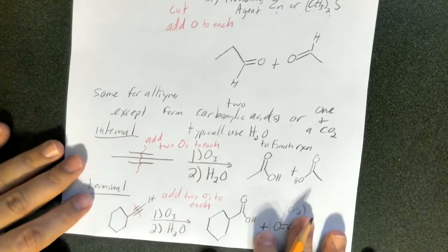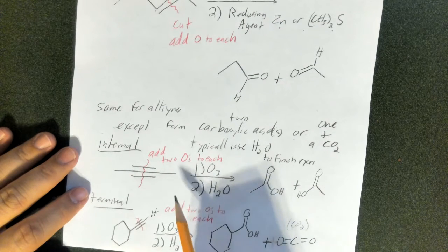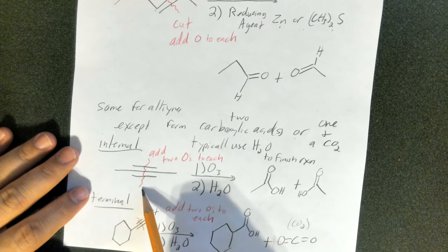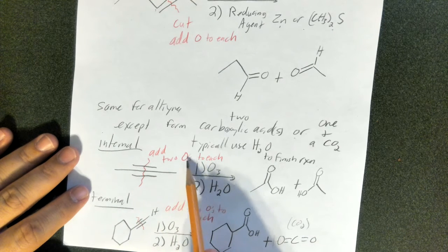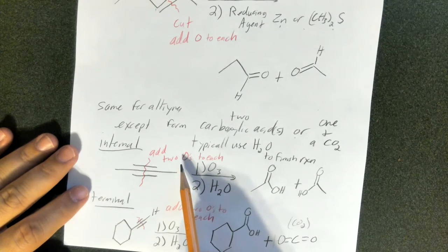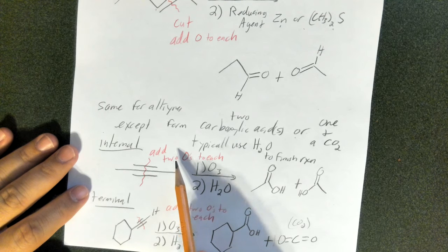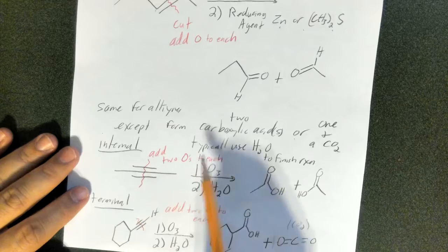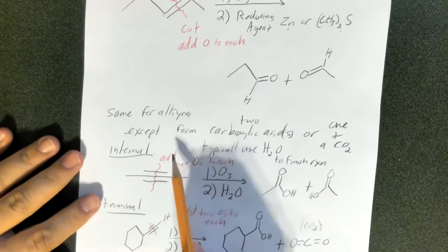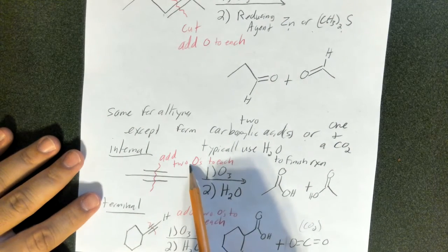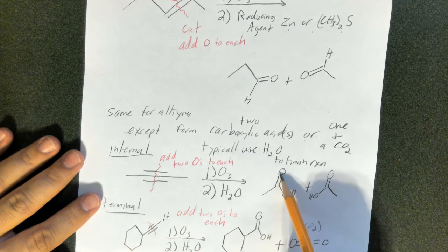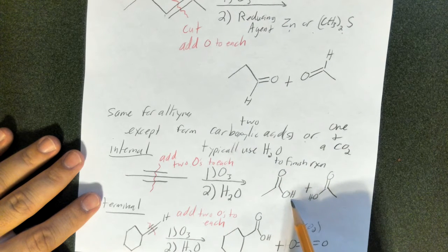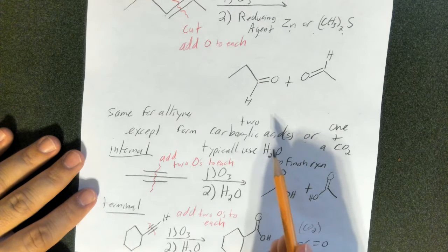For alkynes, there's a slight difference. The main thing is, because they're triple bonds, which means you're cutting across three bonds, you need to still have three bonds, but once again, they're connected to oxygens. In the case of alkenes, you replace each side of the double bond that you cut into two pieces with an oxygen atom. For alkynes, you add two oxygen atoms, one of which is a double bonded oxygen, and the other one is a single bonded oxygen with an H added to it. Essentially, you form carboxylic acids.